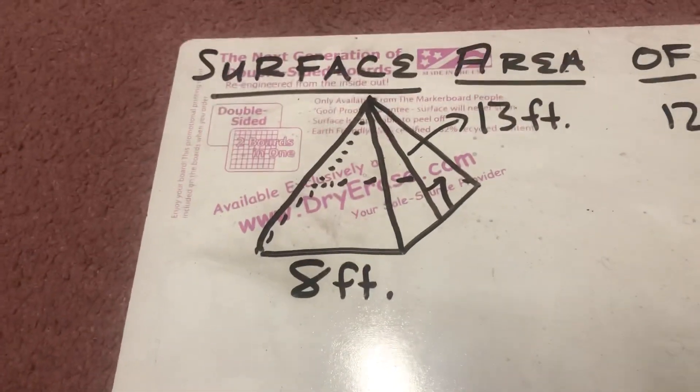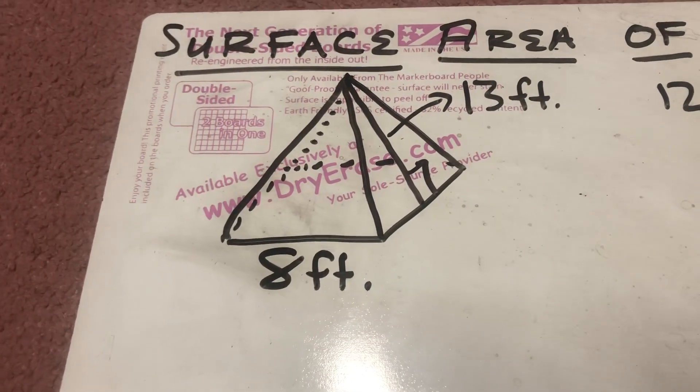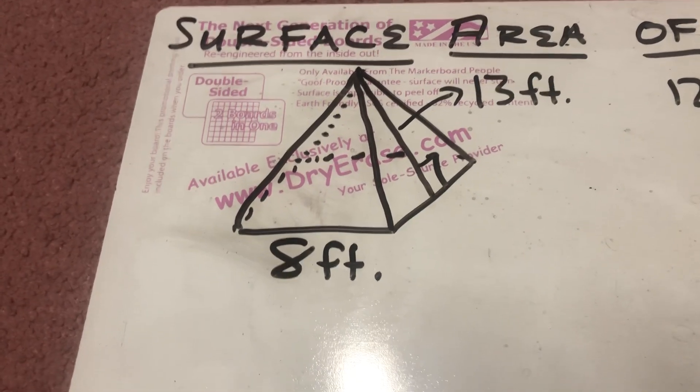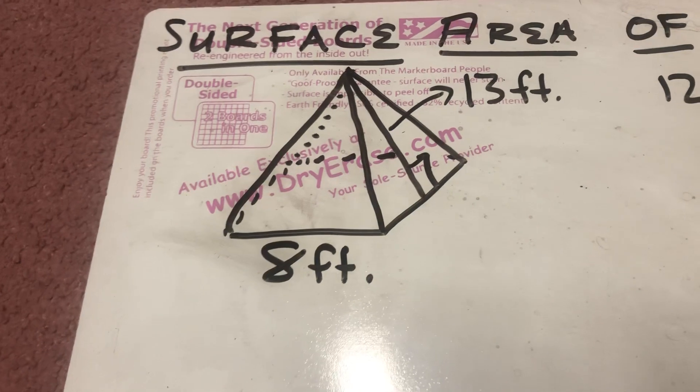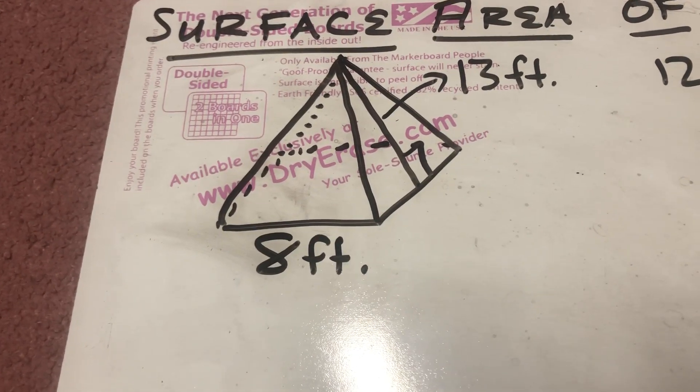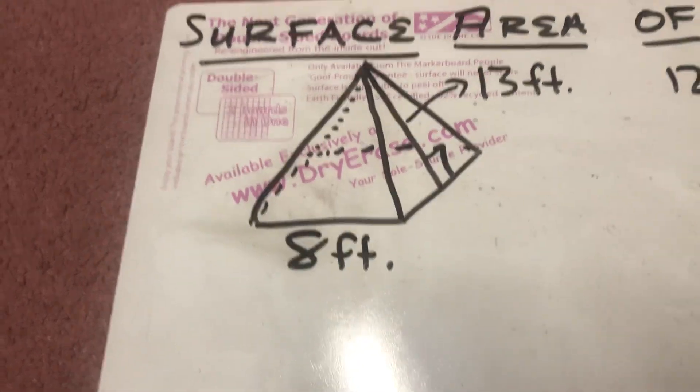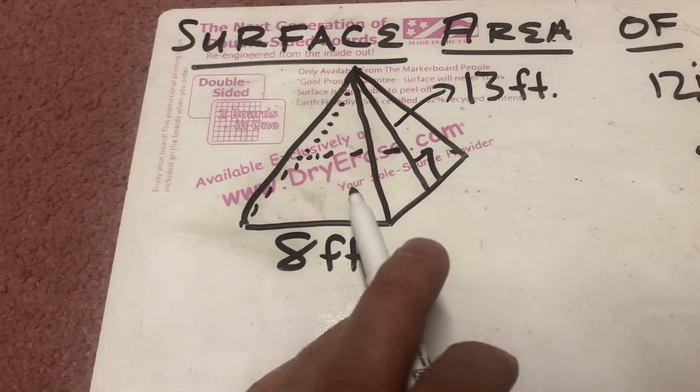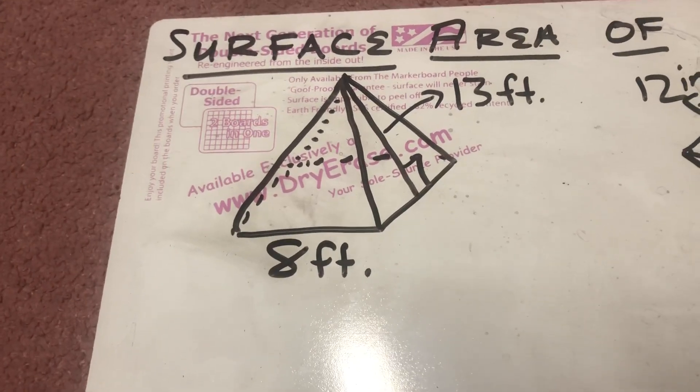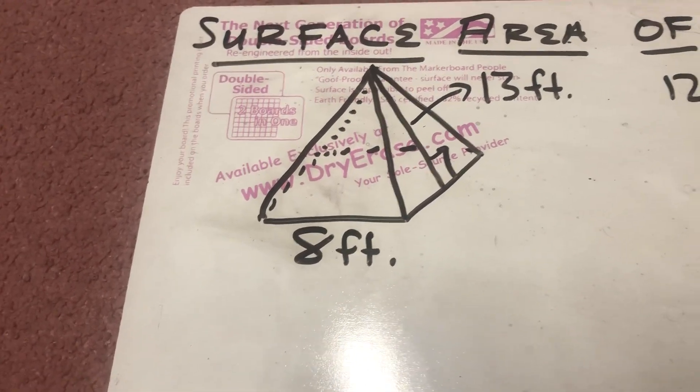So surface area, you'll remember what we talked about the other day, it's like you're wrapping a gift. And if you want to know how much wrapping paper you need to put around it, that is surface area, if you wanted the exact amount of wrapping paper. We're going to have to figure out the area of the square, and then all the lateral faces, which in this case are all triangles in a pyramid.